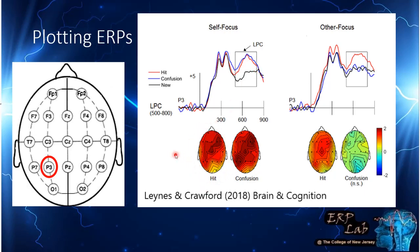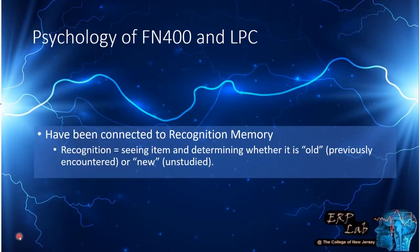This difference map shows the amplitude distribution across the scalp — the nose is up, left on left, right on right — and redder colors mean more positivity at particular electrodes. These ERPs have been connected to recognition memory. Recognition is when you see an item in your environment, or in the laboratory after being exposed to a list of information, and you determine whether you've seen it before — whether it's old, previously encountered, or new, that is unstudied.